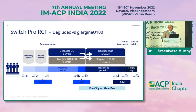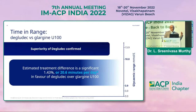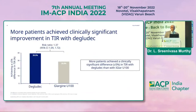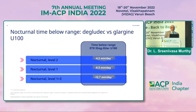Another evidence is the Switch PRO-RCT study — Degludec versus Glargine U100. Degludec OD plus or minus OADs and Glargine similarly switched over after 18 weeks of exposure to each drug in this crossover study ending at 34 weeks. It showed superiority of Degludec: the estimated treatment difference is a significant 20 minutes per day, or 1.43% time in range, in favor of Degludec versus Glargine. Time in tight glycemic range of 70–140 mg/dL was also significantly achieved in the Degludec arm. More patients achieved clinically significant improvement in TIR, and nocturnal time below range — hypoglycemic episodes — was significantly reduced with Degludec compared to Glargine.